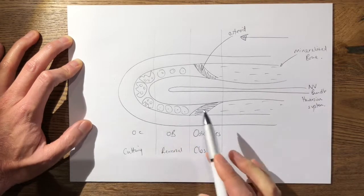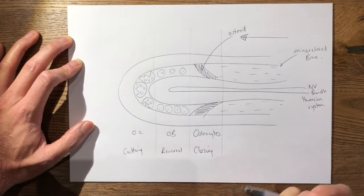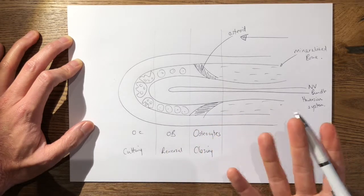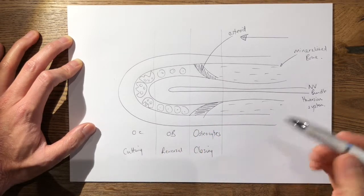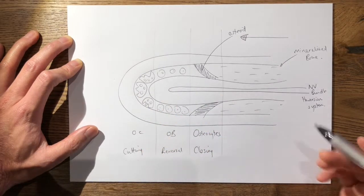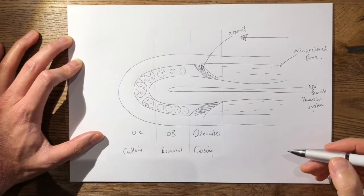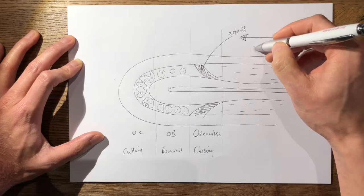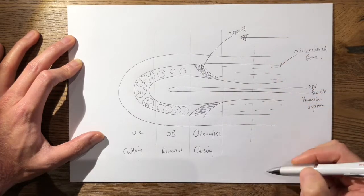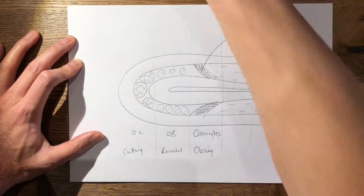This is a cutting cone, and this is how bone eventually remodels. It remodels along lines of force, and if you were to take a cross-section of the mature area of the cutting cone, you'll then get back to the previous image that you drew.